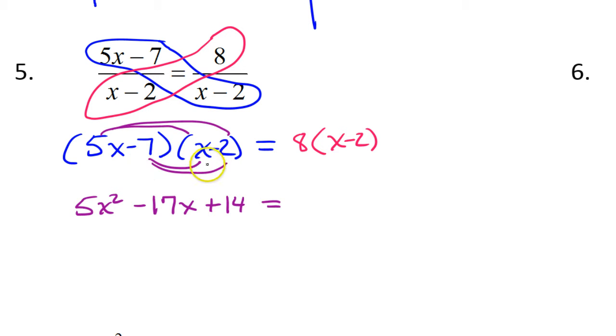So that's when you multiply these binomials together. Here I would just distribute, so that'll give me 8x minus 16. Now I'm going to get zero on one side to do this, so I will subtract 8x from both sides and add 16 to both sides.